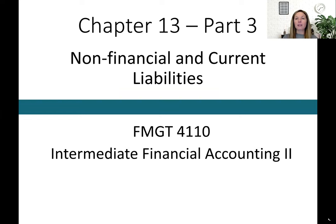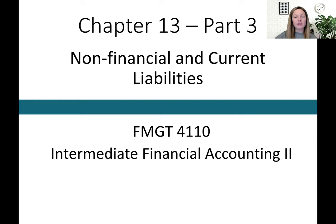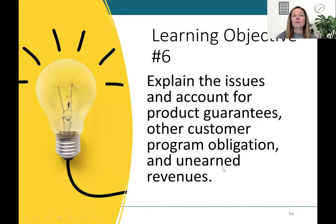Welcome back to chapter 13. Let's go through our last part of chapter 13 and talk about warranties, contingent liabilities, and some common ratios that we use to analyze financial statements. Our first learning objective is to explain the issues and account for product guarantees, other customer program obligations, and unearned revenues.